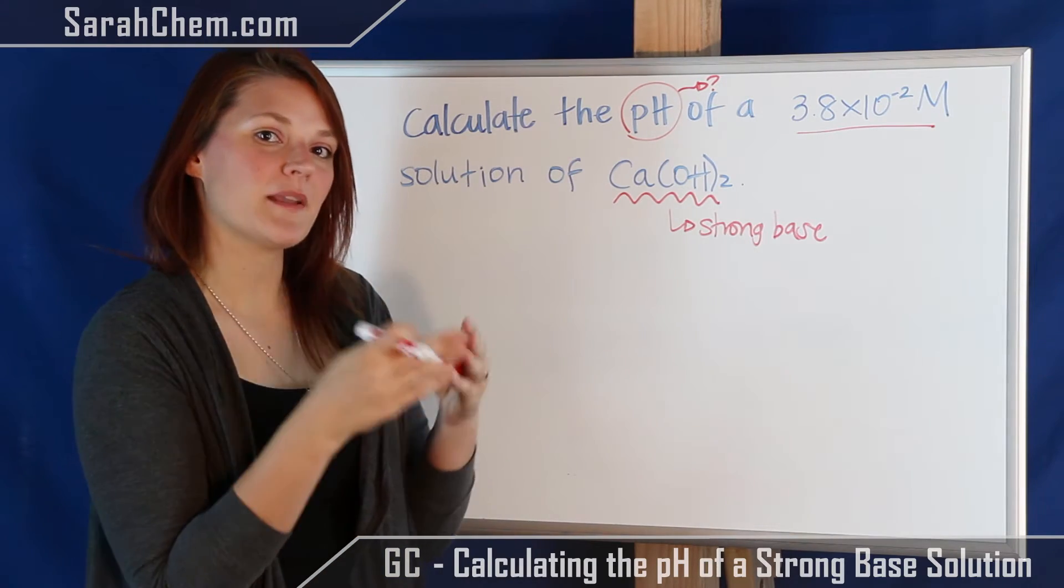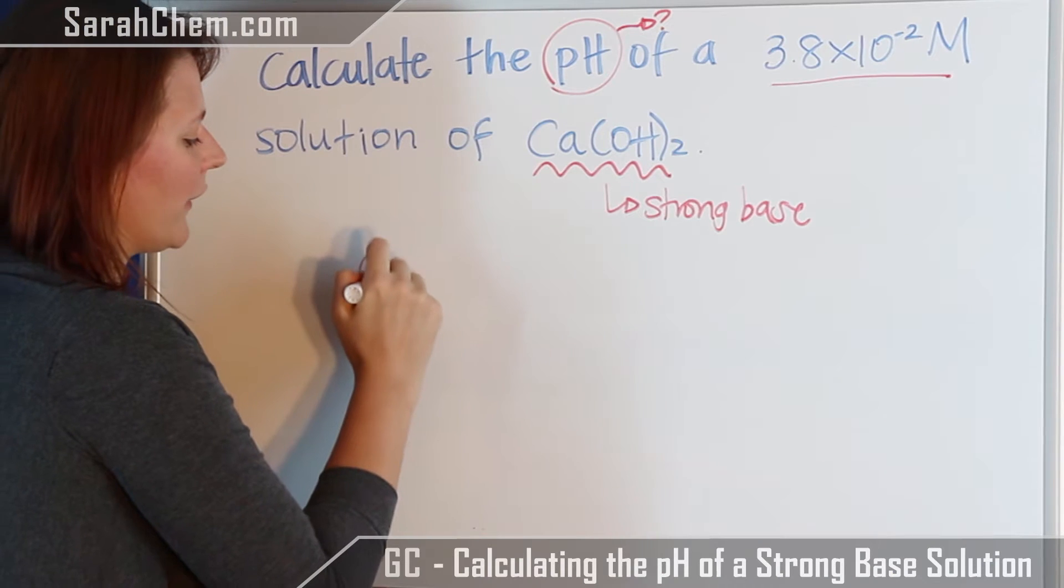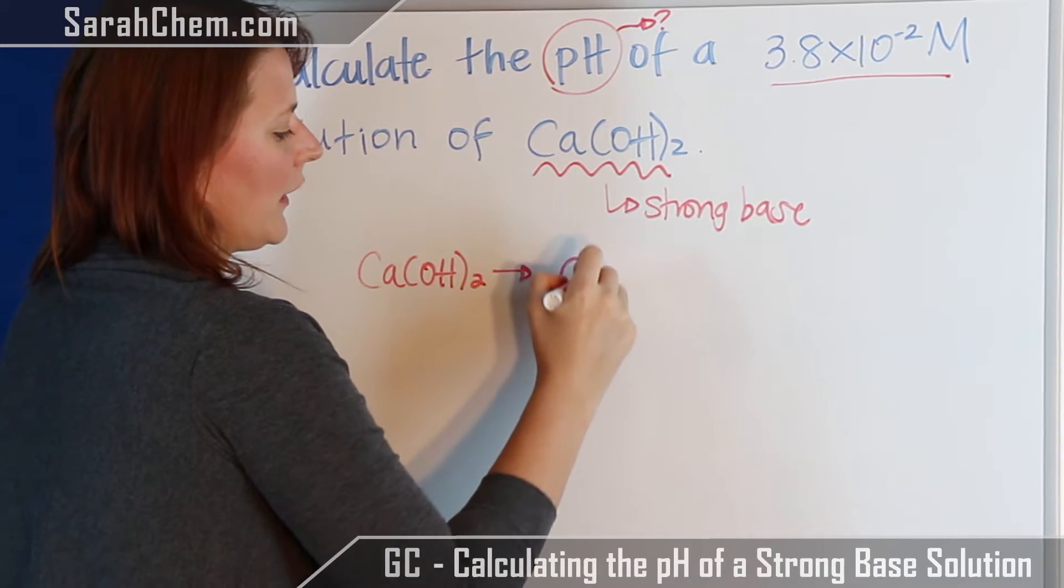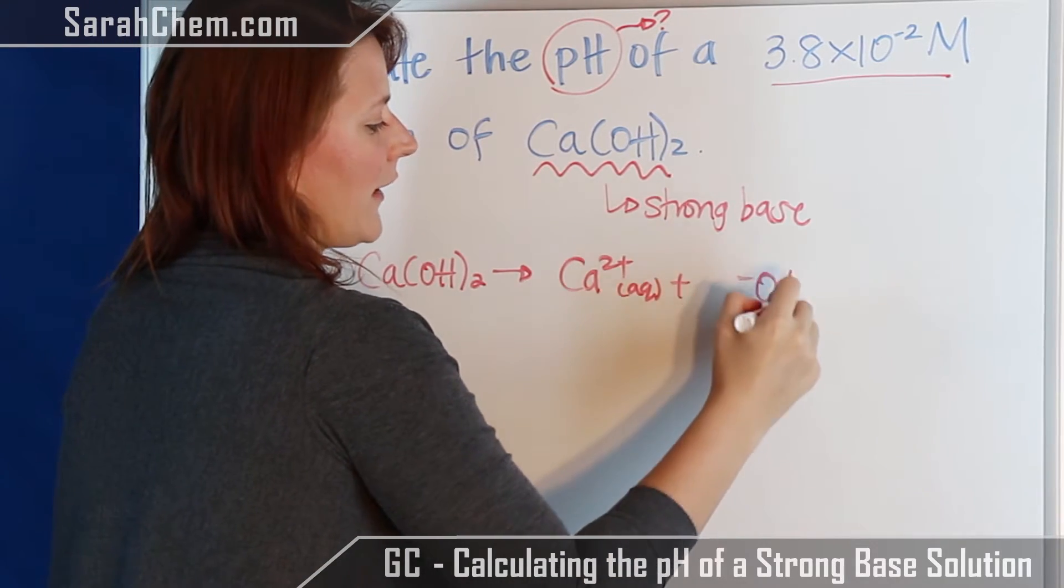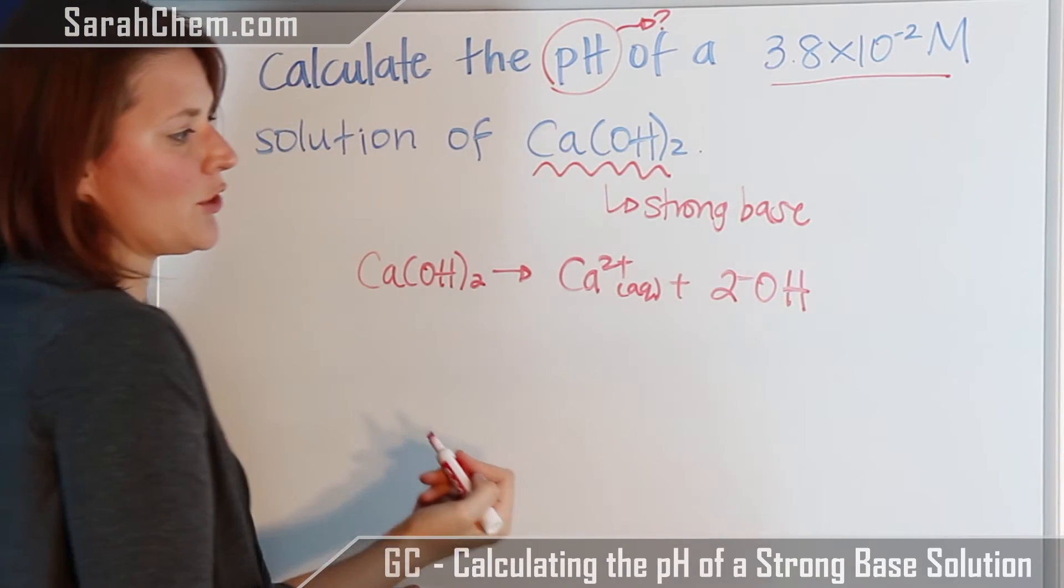So we know that if it's a strong base, that means it completely dissociates. So if we write that reaction out, we would have calcium hydroxide breaks apart into calcium ions and hydroxide ions. Because there were two in this overall compound, we'd put a two in front there.